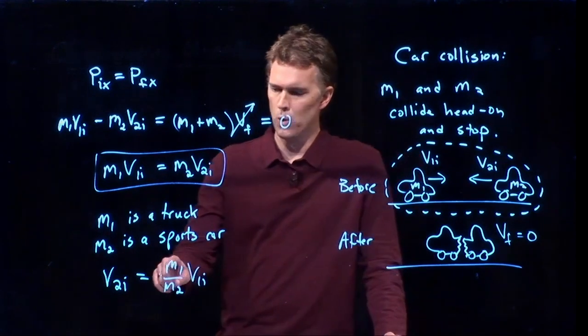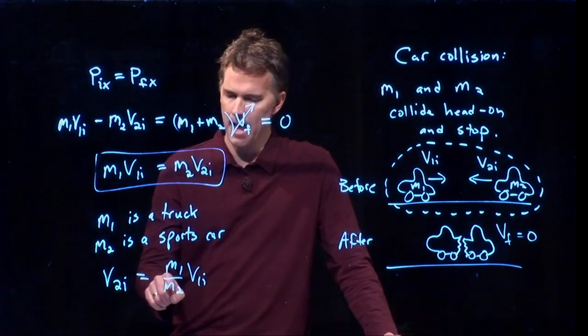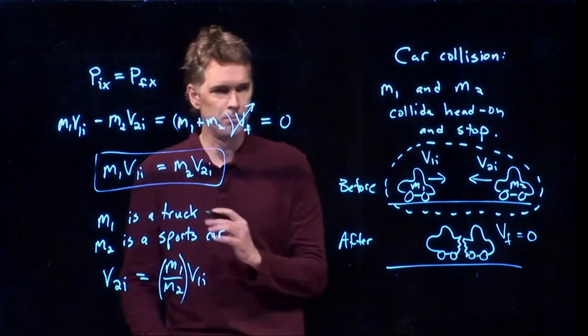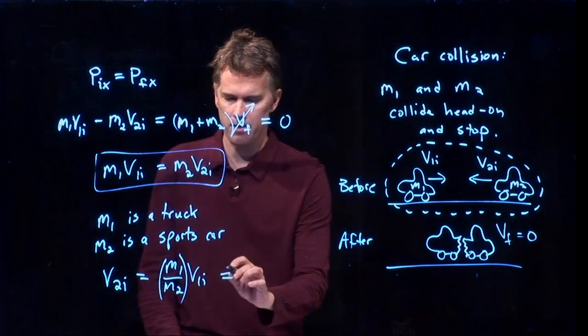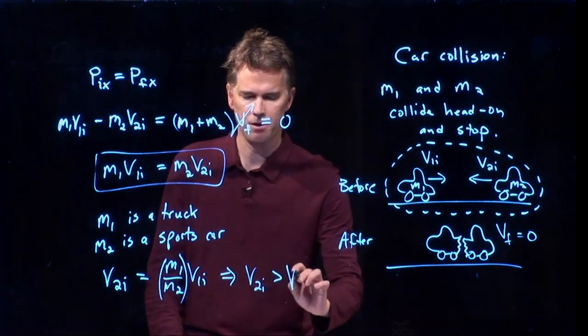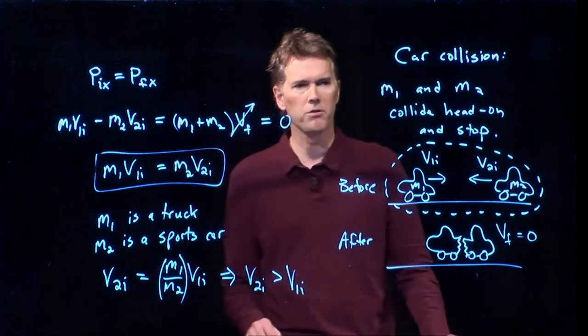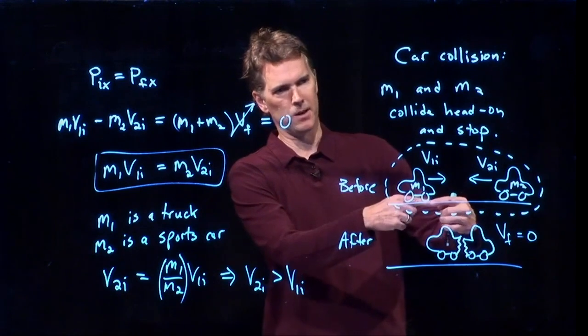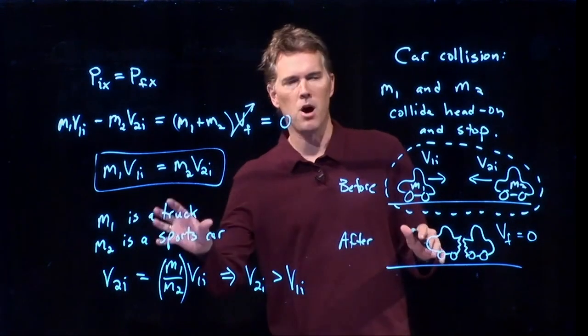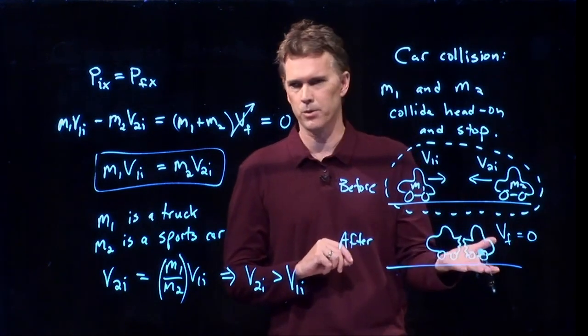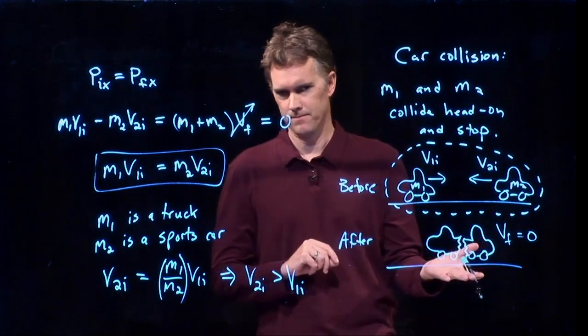And if m1 is a truck and m2 is a sports car, then this number right here is bigger than one and therefore v2i has to be bigger than v1i. The sports car has to be moving faster than the truck in order to get it to come to a stop. And the smaller the sports car is, the faster it has to be going in order to get that truck to come to a stop.